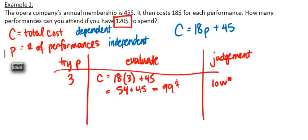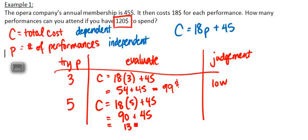Let's try 5. If we have $18 times 5 performances, we have 90, plus $45, and that makes $135. Unfortunately, this is too high now.